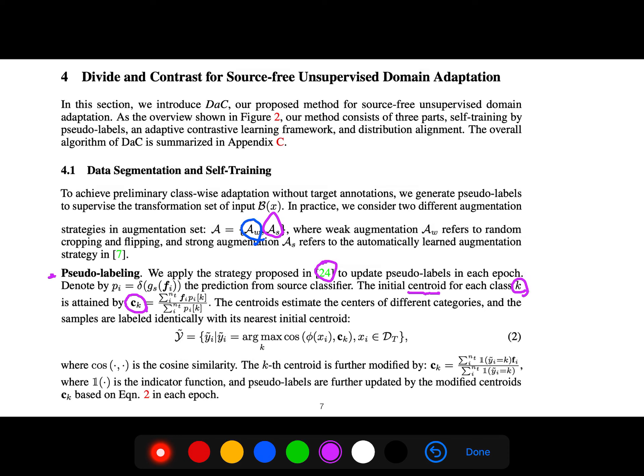Samples are labeled identically with their nearest initial centroid using argmax of the cosine distance between phi(x_i) and c_k. The k-th centroid is further modified by this equation, where the pseudo-labels are updated by the modified centroid.